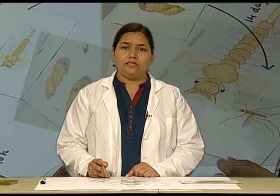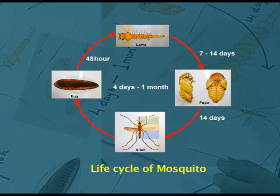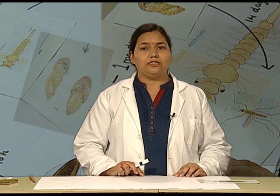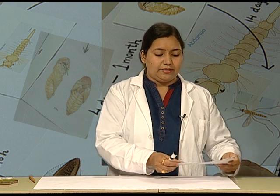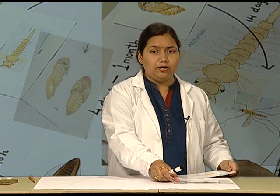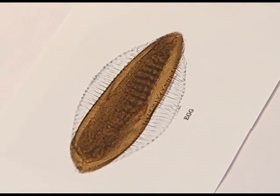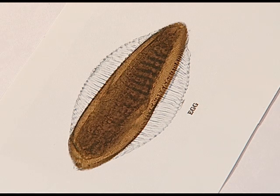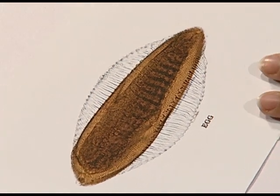Now we will observe the different stages of mosquito via photographs and trace the life cycle of the mosquito. The first stage, as mentioned, is the egg. The egg can be oval or circular in morphology, and within 48 hours these eggs turn into a larva.